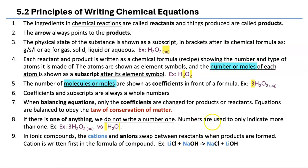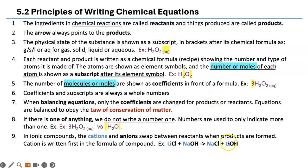Here are two ionic compounds — I've shown the cations in blue. Lithium and sodium will swap their partners and make new compounds. Lithium will combine with hydroxide to make lithium hydroxide, and sodium will combine with chlorine to make sodium chloride. Please remember all of this and write it down.